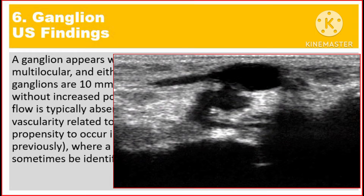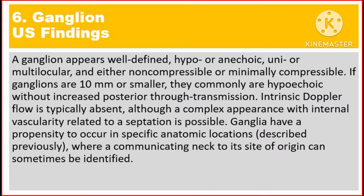If ganglions are 10 mm or smaller, they commonly are hypoechoic without increased posterior through-transmission. Intrinsic Doppler flow is typically absent, although a complex appearance with internal vascularity related to septation is possible.